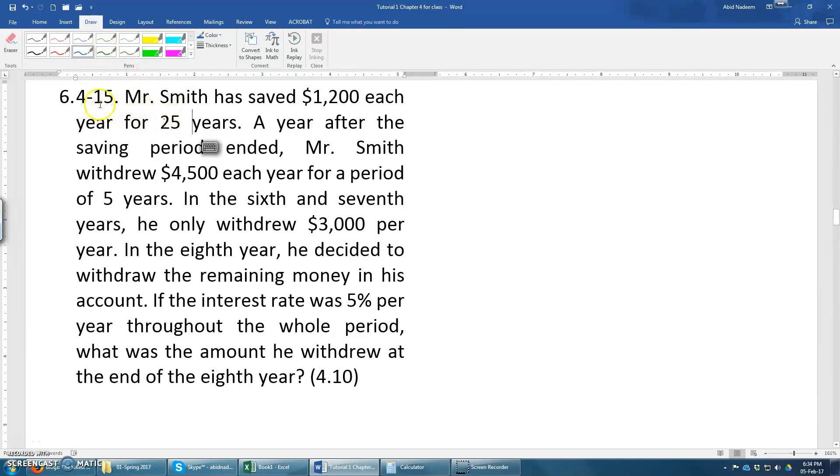Okay, problem 4-15. Mr. Smith has saved $1,200 each year for 25 years. A year after the saving period ended, Mr. Smith withdrew $4,500 each year for a period of 5 years. In the 6th and 7th years, he only withdrew $3,000 per year.